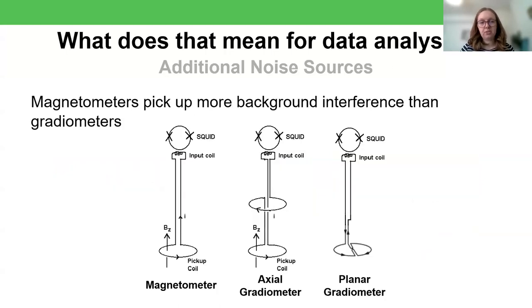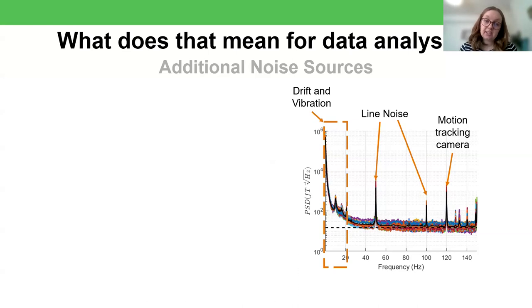So then moving on to the final section, what does that mean for data analysis? Well, firstly, the M of OPM stands for magnetometer, and magnetometers pick up more background interference than gradiometers, simply because the idea of a gradiometer is that you record from two different positions and subtract one from the other. So the idea there being that the interference will be common across those two positions, and so will be subtracted when you take one away from the other. With a magnetometer, we don't get that same interference rejection. And so you might find that the noise spectrum looks slightly noisier than you perhaps are used to.